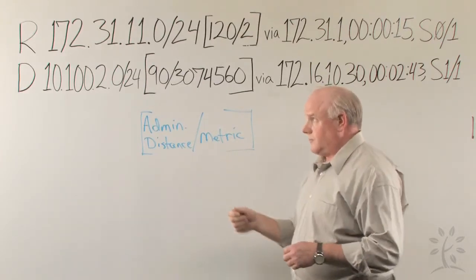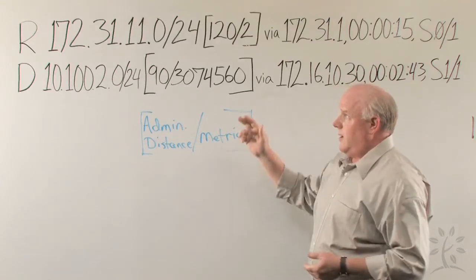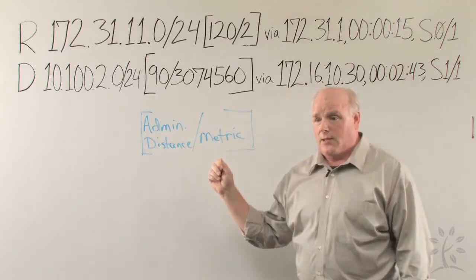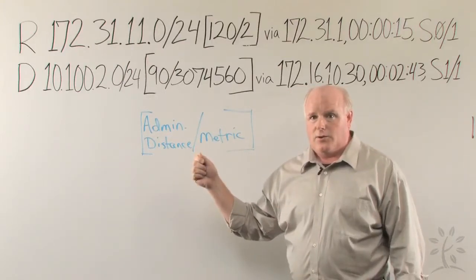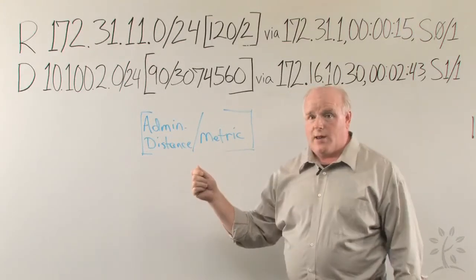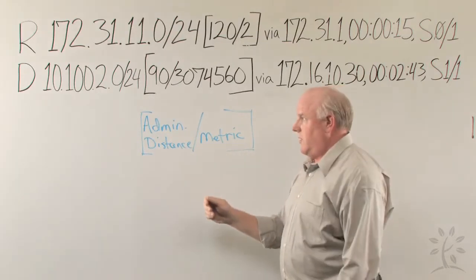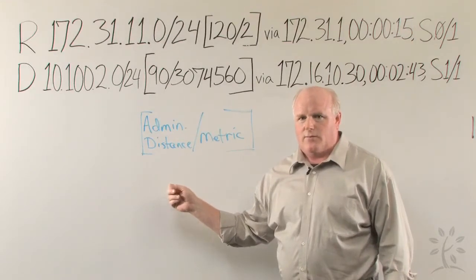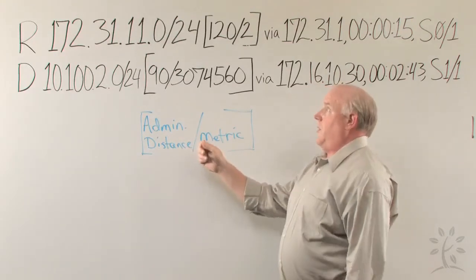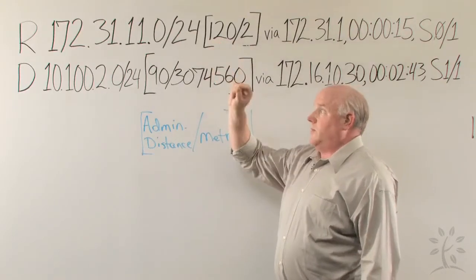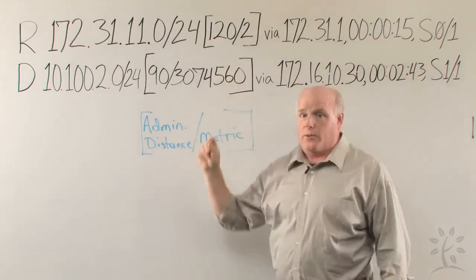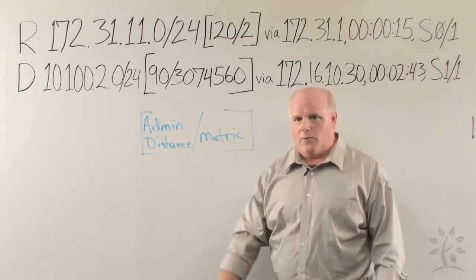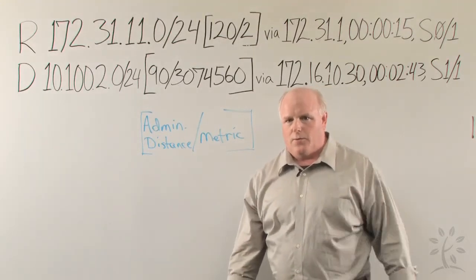You can also manipulate this administrative distance by making it higher than it should be. Configure a static route—this is a little more challenging, but it's worth trying—configure a static route that should have an administrative distance of one. But, at the end of the command, type 121 to make the administrative distance less reliable than RIP. And you'll see that the static route does not show up in the routing table until you remove the RIP protocol.